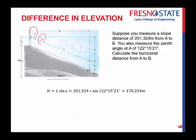Simply put, H is, take the slope distance times the sine of Z, and Z in this instance is our zenith angle. So 201.324 times the sine of 122 degrees, 15 minutes, 21 seconds, is equal to 170.254. So it seems a little simpler, more intuitive as we go through that, but the previous example just helps you see that there's other ways to be able to calculate, reduce a slope distance to a horizontal distance.